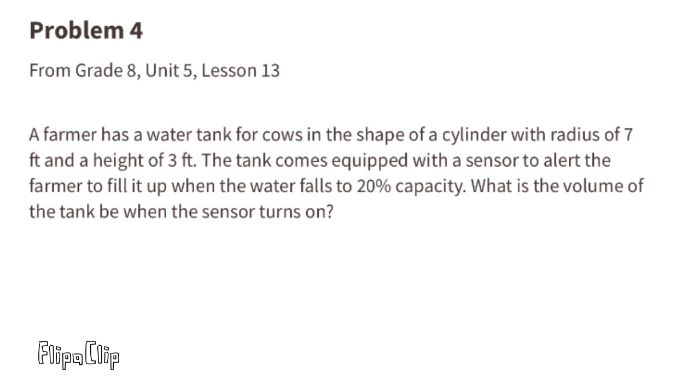Problem number 4 from 8th grade unit 5 lesson 13. A farmer has a water tank for cows in the shape of a cylinder with a radius of 7 feet and a height of 3 feet. The tank comes equipped with a sensor to alert the farmer to fill it up when the water falls to 20% capacity.